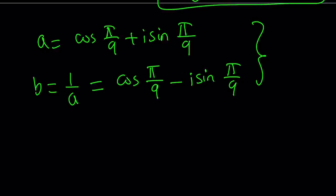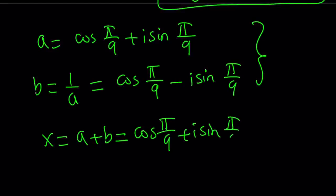So what am I doing? Well, I got the value of a and b, so I can write my x. x is a + b, remember? So it's going to be cos(π/9) + i·sin(π/9) + cos(π/9), running out of space, minus i·sin(π/9). Squeeze.